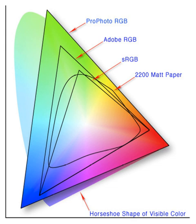Examples of obsolete color spaces include RG for early Technicolor film and RGK for early color printing.